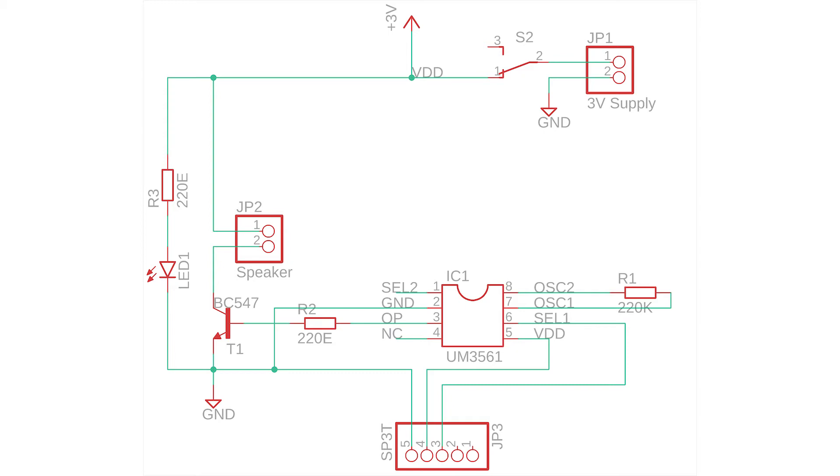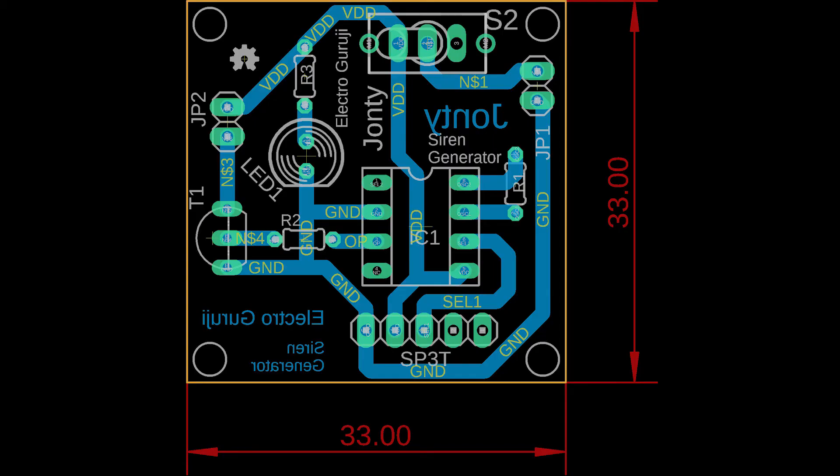A dynamic speaker is driven via an external NPN transistor and SPDT switch is used to turn the circuit on and off. A LED is used to indicate when the circuit is switched on. The circuit needs a 3 volt power supply and hence uses two 1.5 volt AA batteries connected in series. You can find all the schematics, board layout and other files in the link in the description.